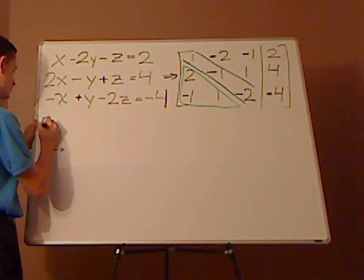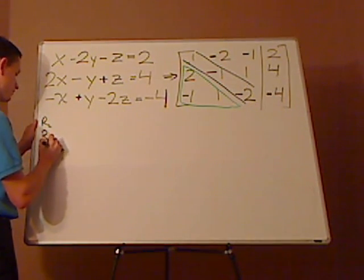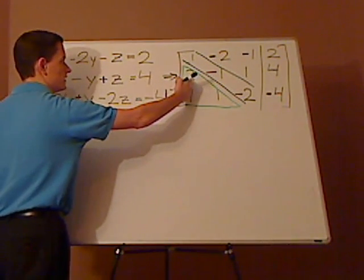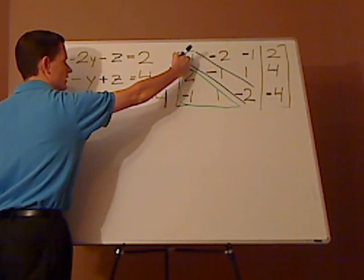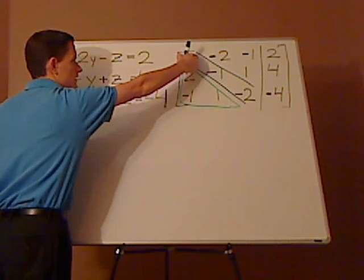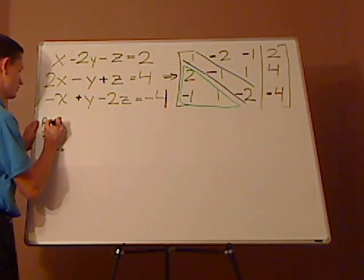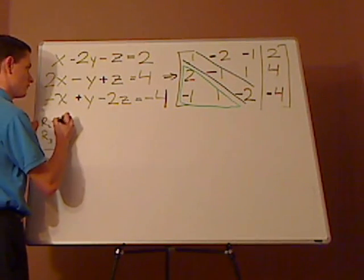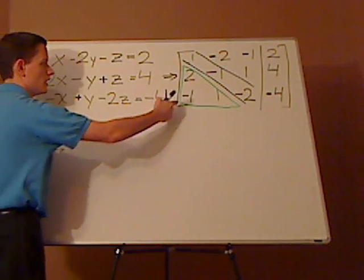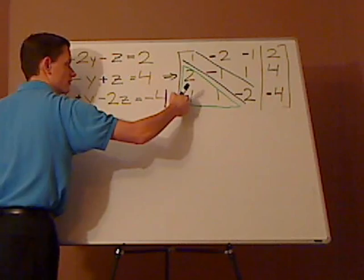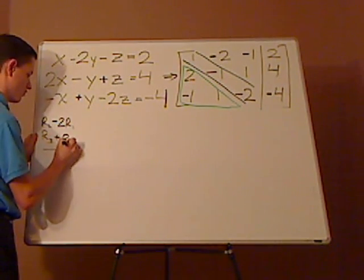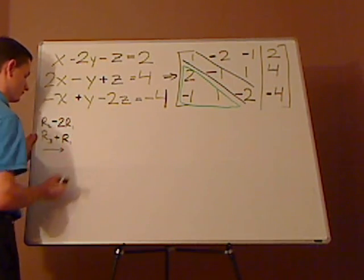You want to start by eliminating the 2 and the negative 1. I'm going to do two row transformations at the same time — I want to change row 2 and row 3. I'm going to add row 1, but I need to eliminate that 2, so I need to multiply row 1 by negative 2. Then I add negative 2 times row 1 to row 2, and I'm going to add row 1 to row 3.